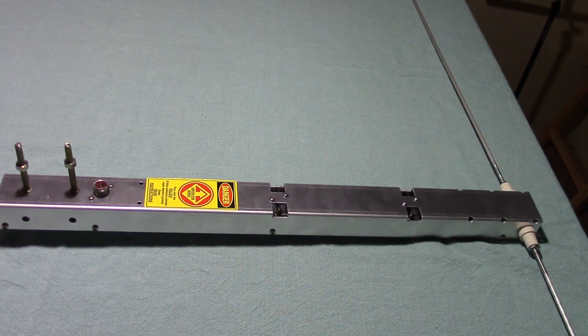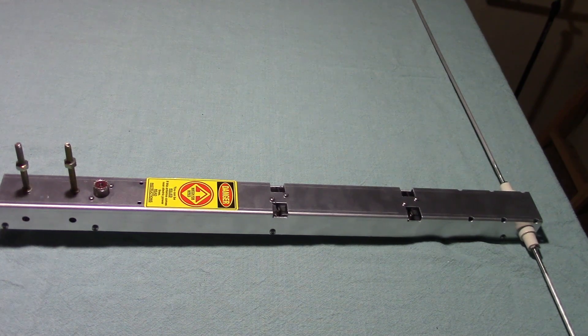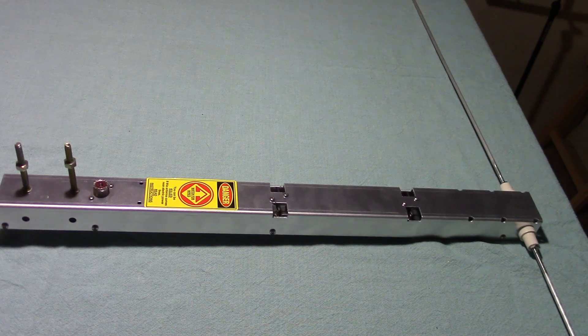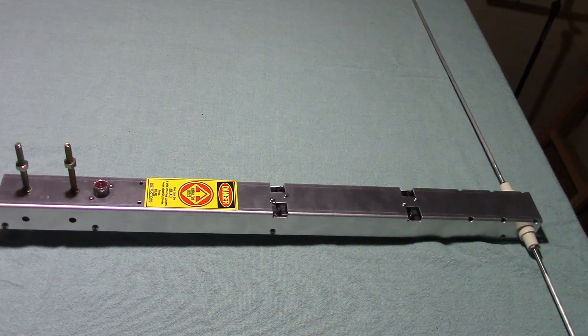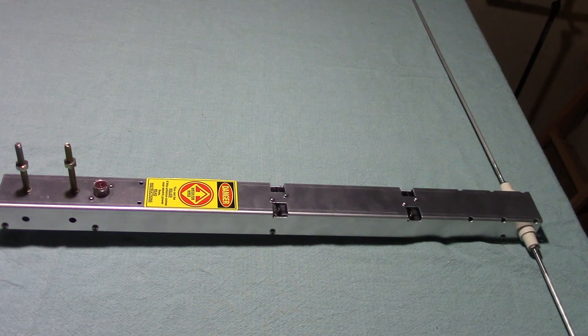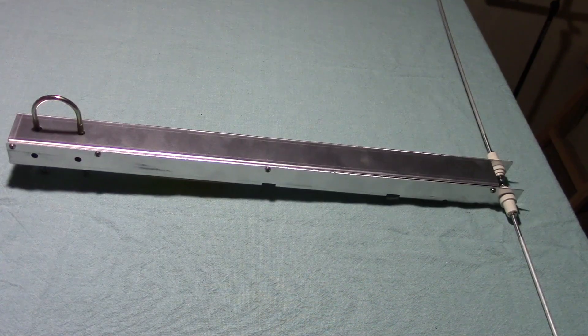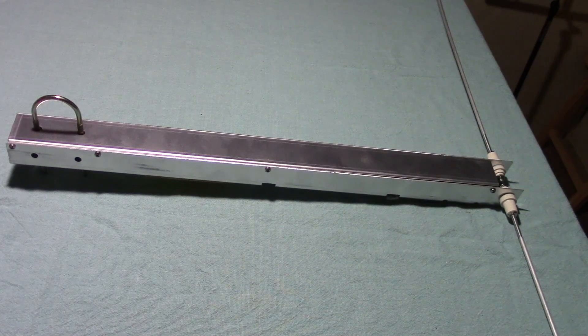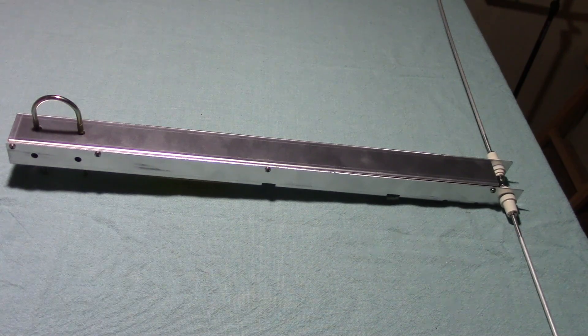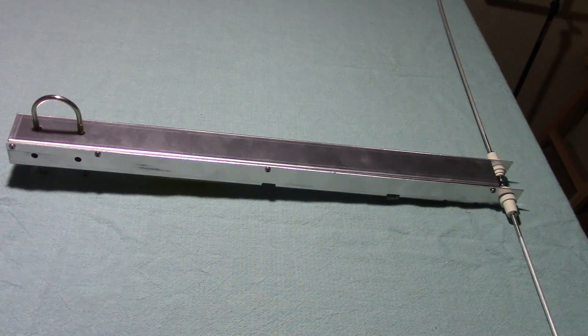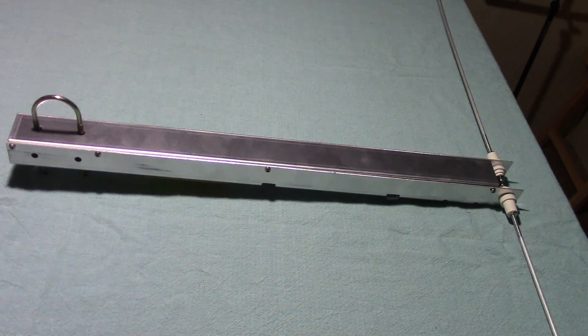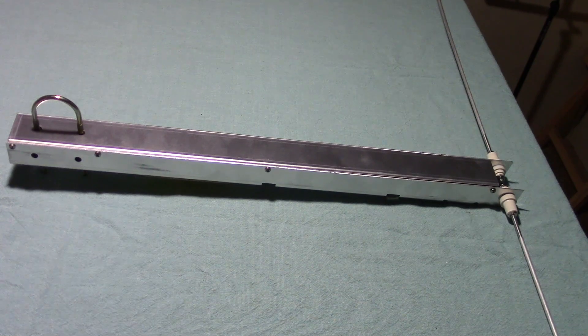So just looking at the components here. Here's the U-bolt to mount it to the mast. Here's your SO239 connector. And then over there on the right, you see where the two radiators come into the base part of the antenna. So what I'm going to do is turn it over and show you what it looks like on the other side. Okay, here we are. We've got the antenna turned over. You see there on the left, the U-bolt. And on the right again, where the radiators come into the base. I'll zoom in close on that and show you how those attach to the base.